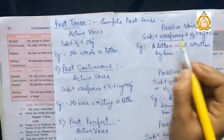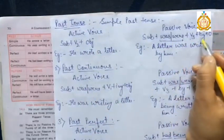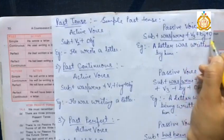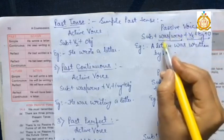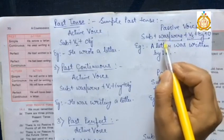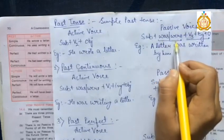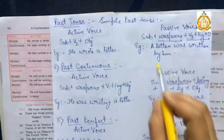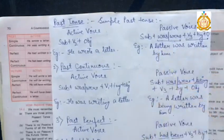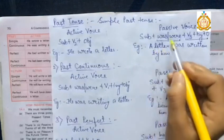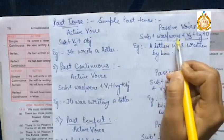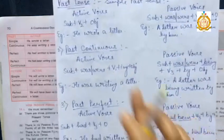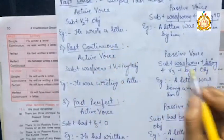In passive voice for simple past tense, it will be: was/were + verb's third form + by + object. This section remains the same; only the helping verb changes. 'Was' and 'were' are used in past tense — 'was' is used with singular subjects and 'were' with plural. So the example becomes: 'A letter was written by him,' since 'a letter' is singular.